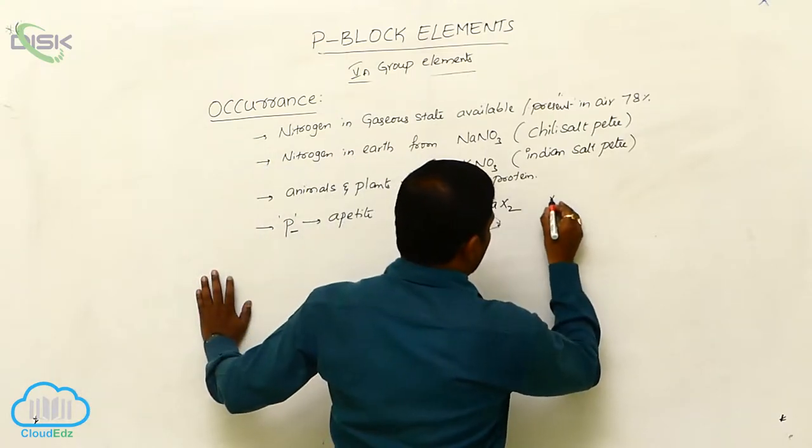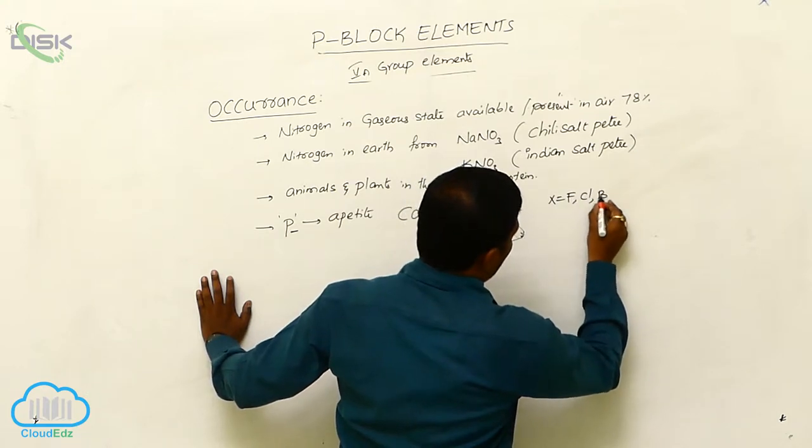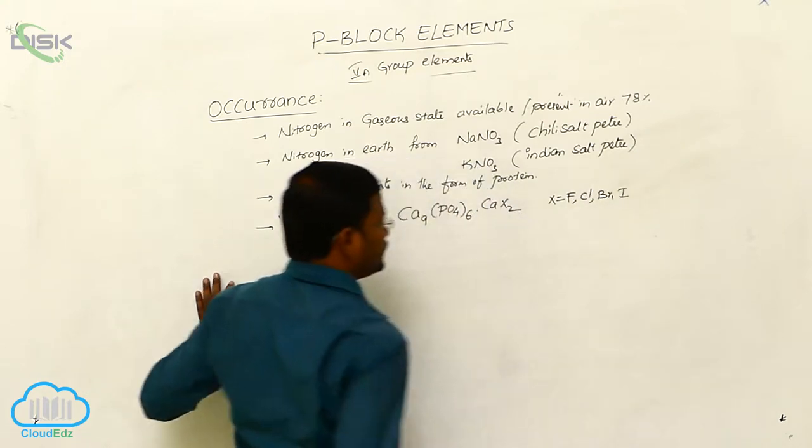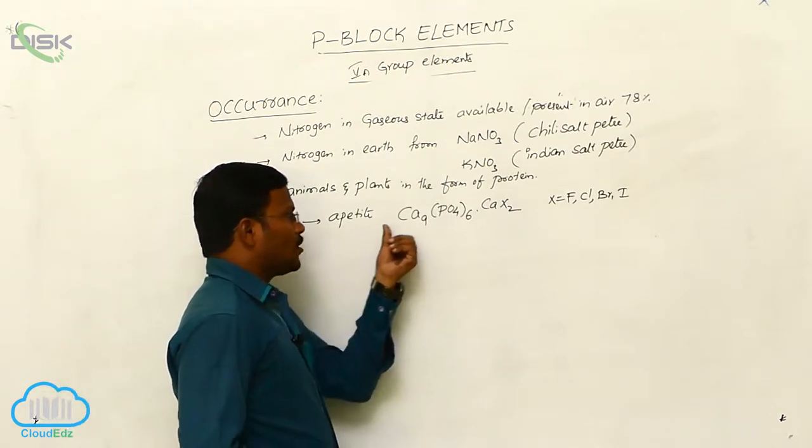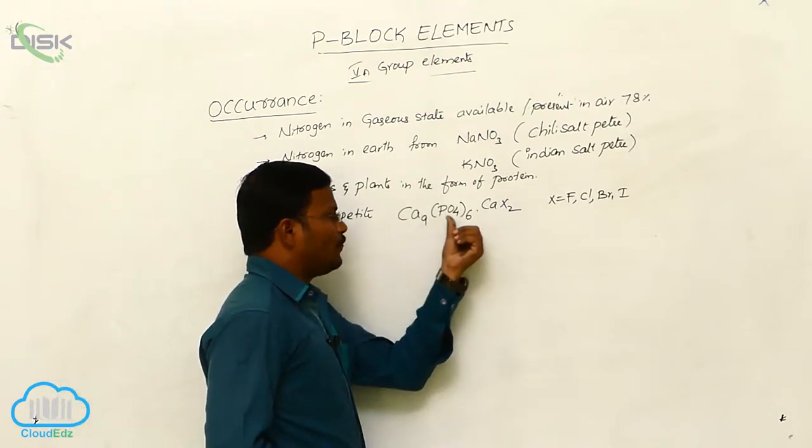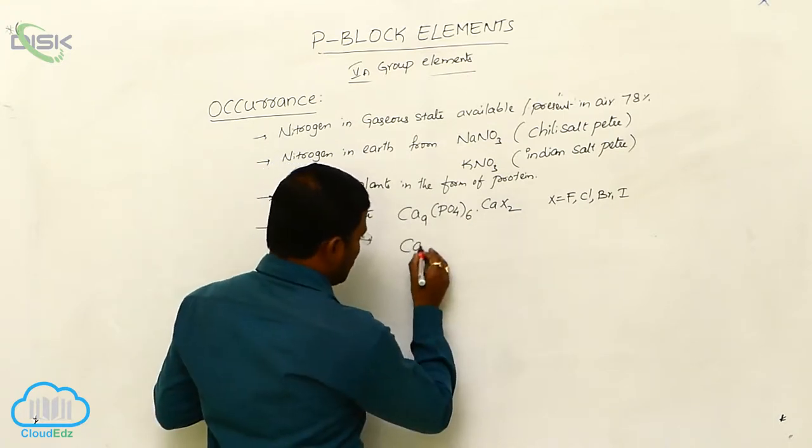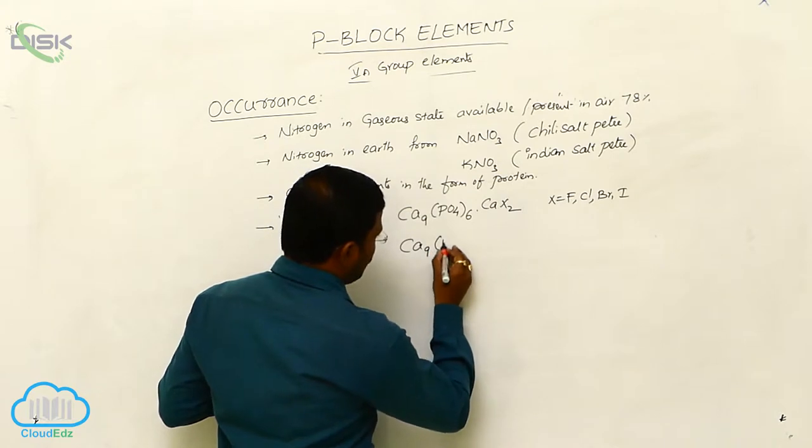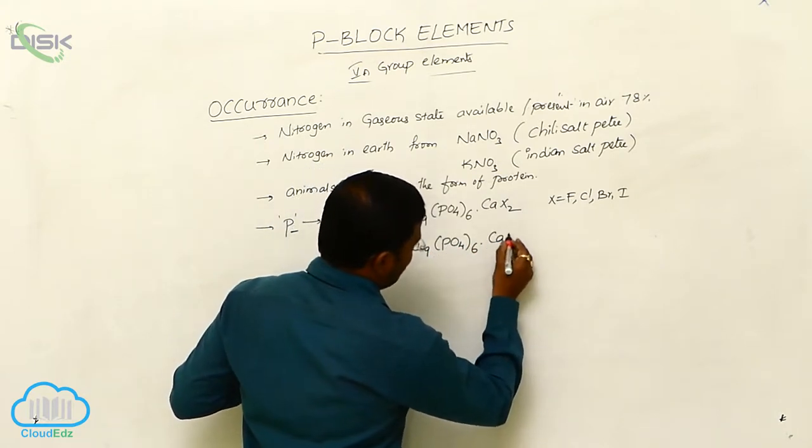Here it is where X may be fluorine, chlorine, bromine, iodine. That means calcium apatite, we can call it as Ca9(PO4)6 CaX2. Here Ca9(PO4)6 CaF2.